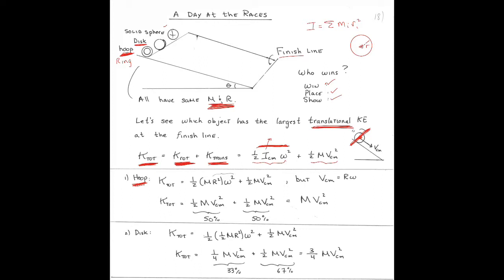That makes the moment of inertia largest compared to a disk or a sphere, where some mass is closer in. For the hoop, all of its mass is as far away as you can get from the axis of rotation. So its moment of inertia has the form MR squared — the coefficient is 1. For a hoop, the moment of inertia about its center of mass is MR squared.